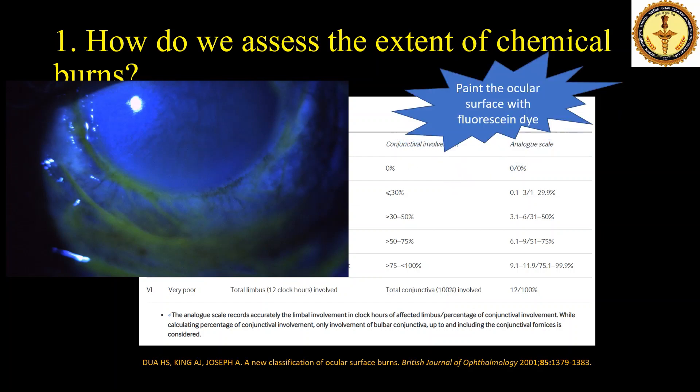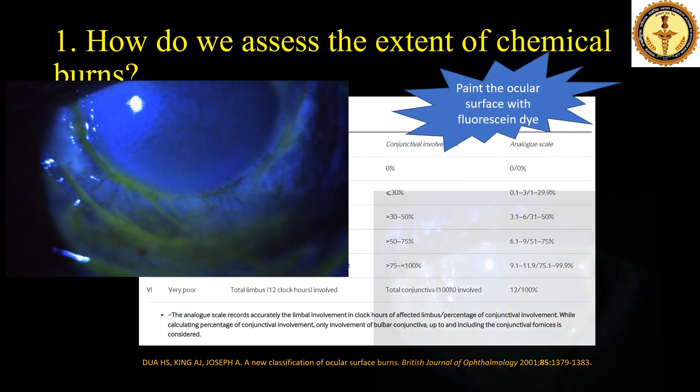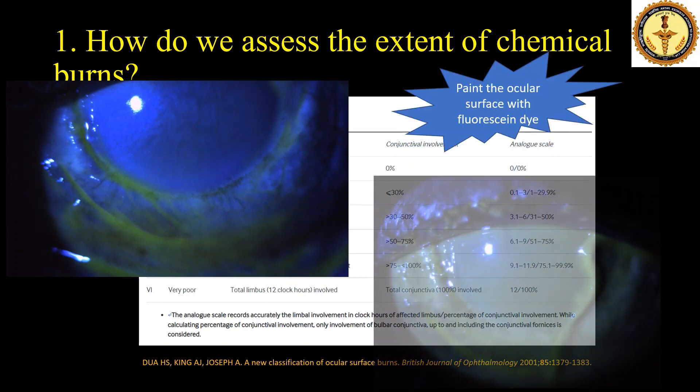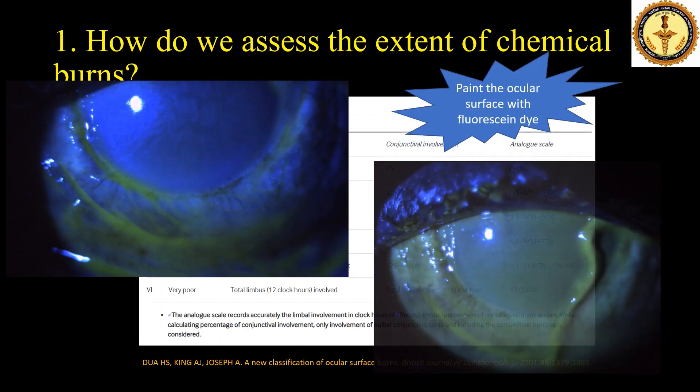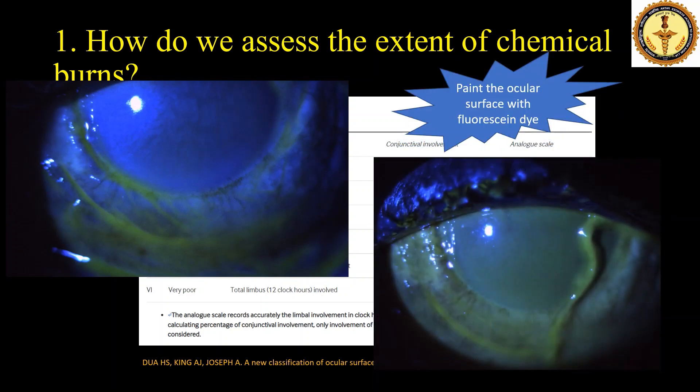However, the same case when painted with fluorescent dye revealed the actual area of surface involvement. So it is mandatory to paint the ocular surface with fluorescent dye rather than just instilling it in the cul-de-sac in cases of acute chemical injury.